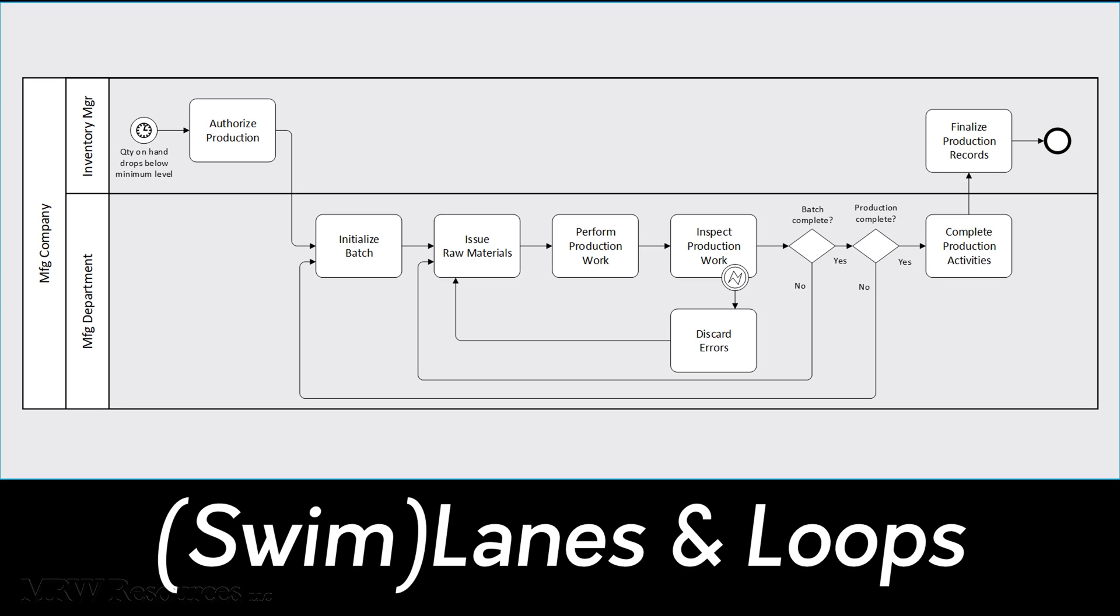We can also analyze exceptions to the standard process, such as errors. For an automotive manufacturer, we would need to break the performed production work down into the many activities, events, and exceptions that would take place on the manufacturing floor. And this is true for whatever type of manufacturer you have. This will be broken down into a lot more detail most of the time.